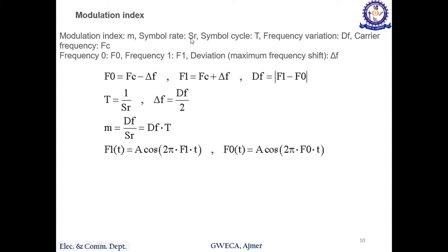Now for modulation index: m is modulation index, Sr is symbol rate, T is symbol cycle, Df is frequency variation, Δf is deviation (maximum frequency shift), Fc is carrier frequency, F0 is frequency 0, F1 is frequency 1. F0 is given by Fc - Δf (carrier frequency minus frequency deviation). F1 is Fc + Δf. So F0 to F1 is this to this.